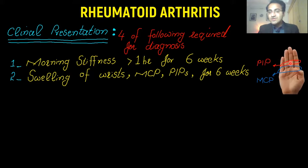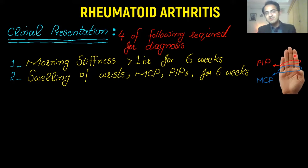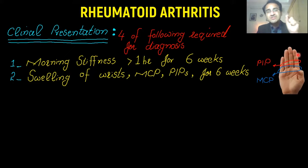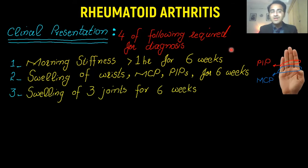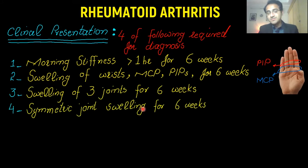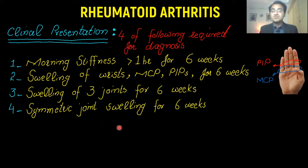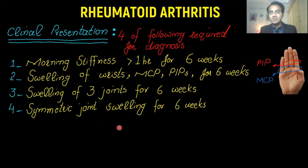This is the metacarpophalangeal joint and this is the proximal interphalangeal joint. One very important point is that rheumatoid arthritis spares the distal interphalangeal joint. If the patient also has disease in the distal interphalangeal joint, you should think about other diseases, because RA spares DIPs. Additionally, there must be swelling of three or more joints for six weeks, and the distribution must be symmetric — rheumatoid arthritis involves joints of both sides, so if it involves one wrist, it will also involve the other.